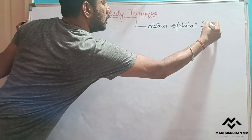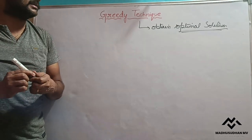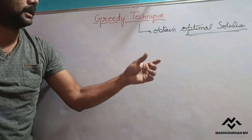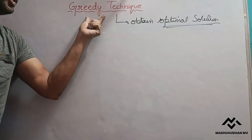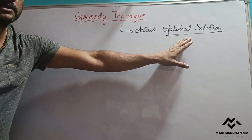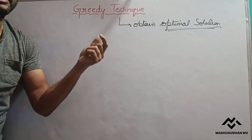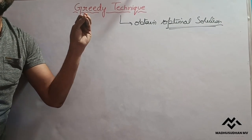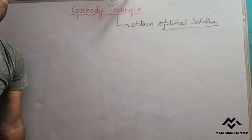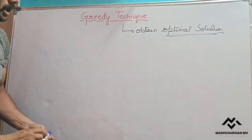This technique is used to obtain an optimal solution. In my previous video, Part 26, I explained what an optimal solution is and also about a feasible solution. What do we mean by optimal solution? The optimal solution is the best among the feasible solutions — out of all the feasible solutions, whichever one satisfies the objective of the problem, that is called the optimal solution. For such types of problems we apply the greedy technique.